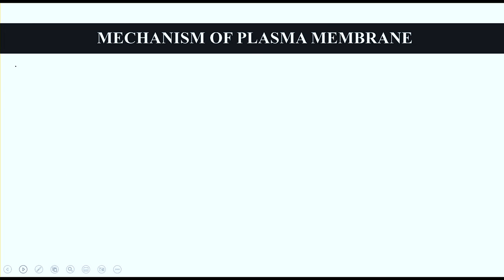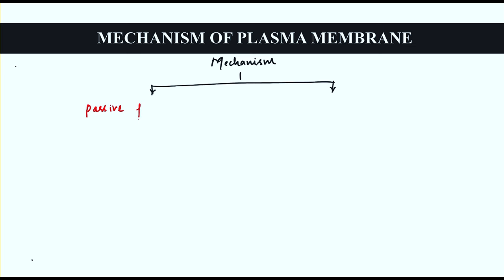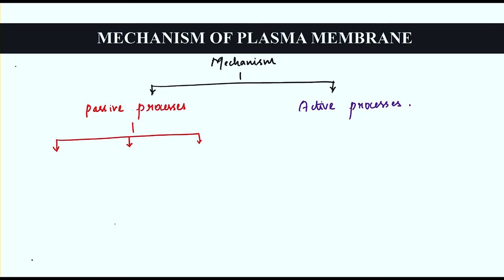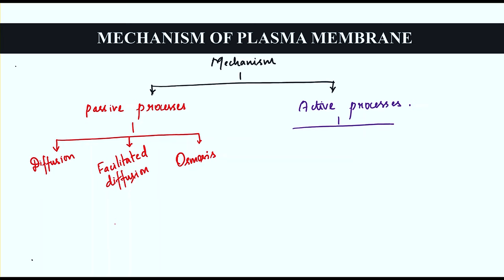The next topic is the mechanism of the plasma membrane. There are two types: passive processes and active processes. Passive processes include diffusion, facilitated diffusion, and osmosis. Active processes include active transport, endocytosis, and exocytosis.